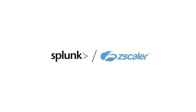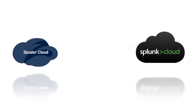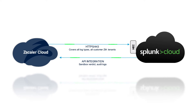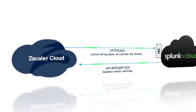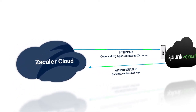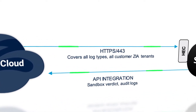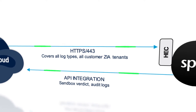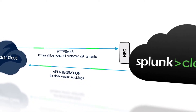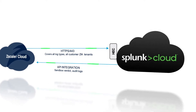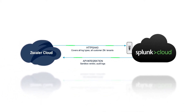Getting Zscaler's high-resolution logs into Splunk has never been easier. With Zscaler and Splunk Cloud, logs and events flow directly from Zscaler into the Splunk Cloud with no additional logging pipelines to manage. Logs are delivered reliably and securely over HTTPS. Zscaler manages, monitors, and scales as needed to keep up with your volume of traffic and logs. So, what's needed to get logs flowing into Splunk Cloud? Let's take a short tour.